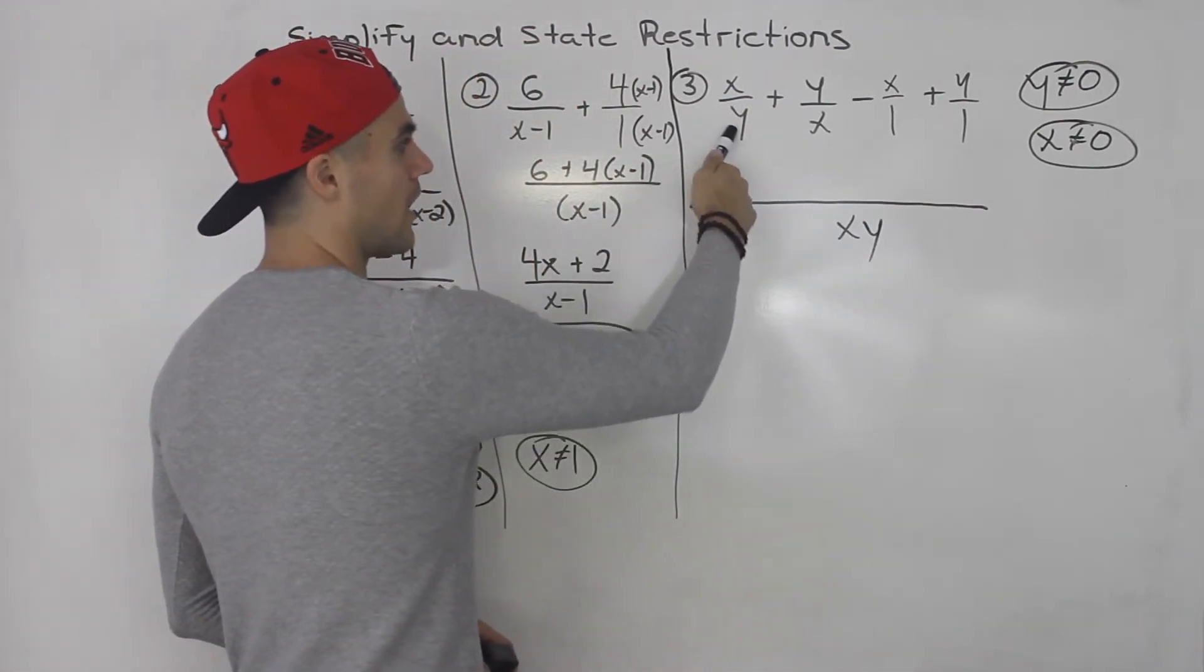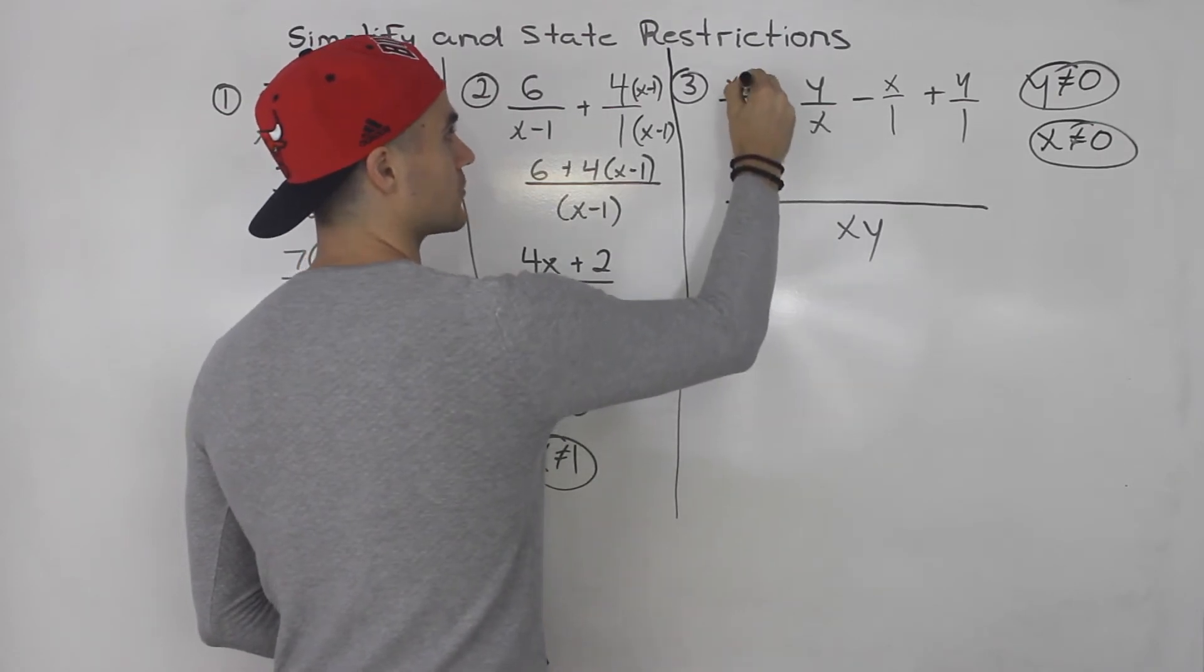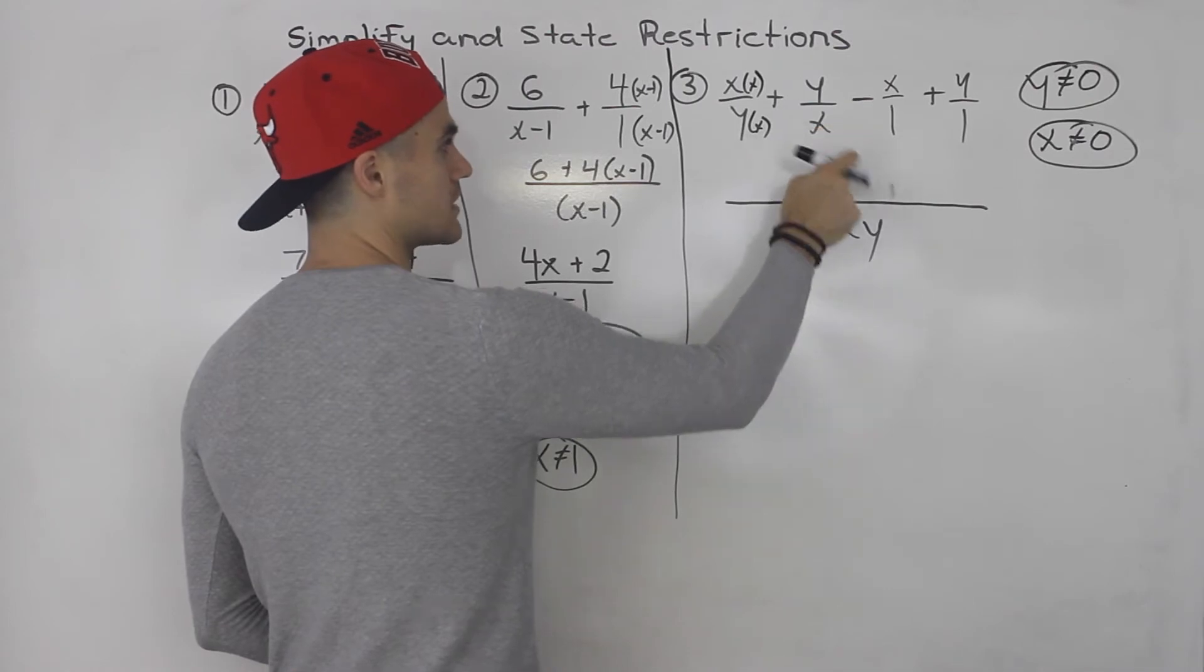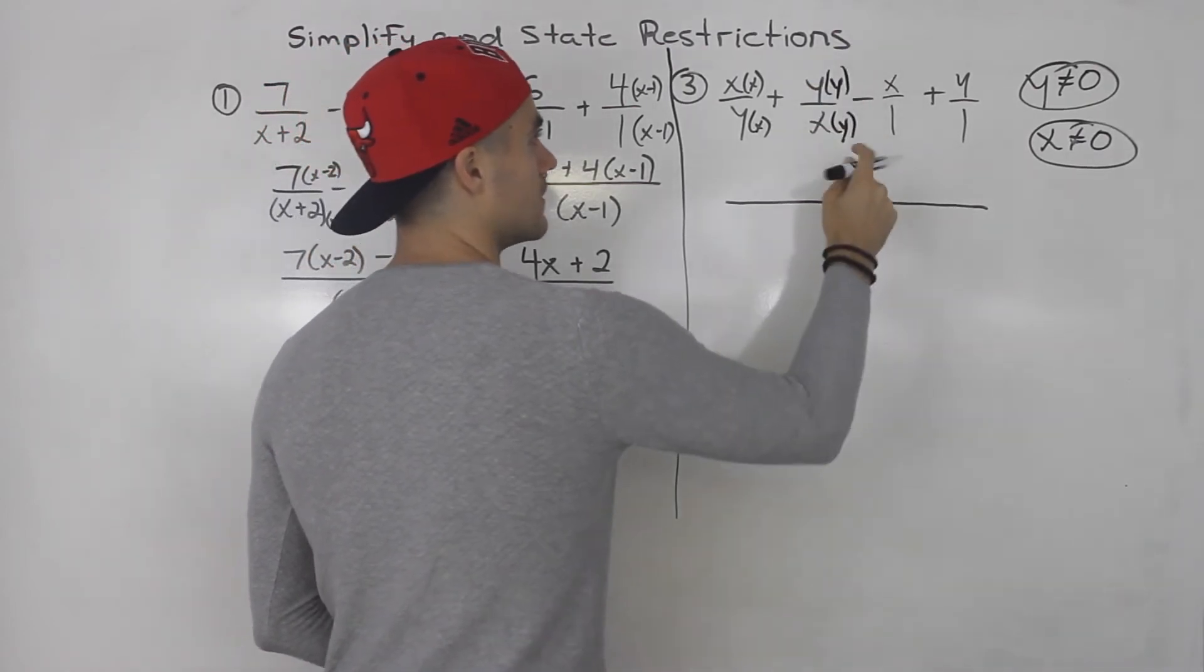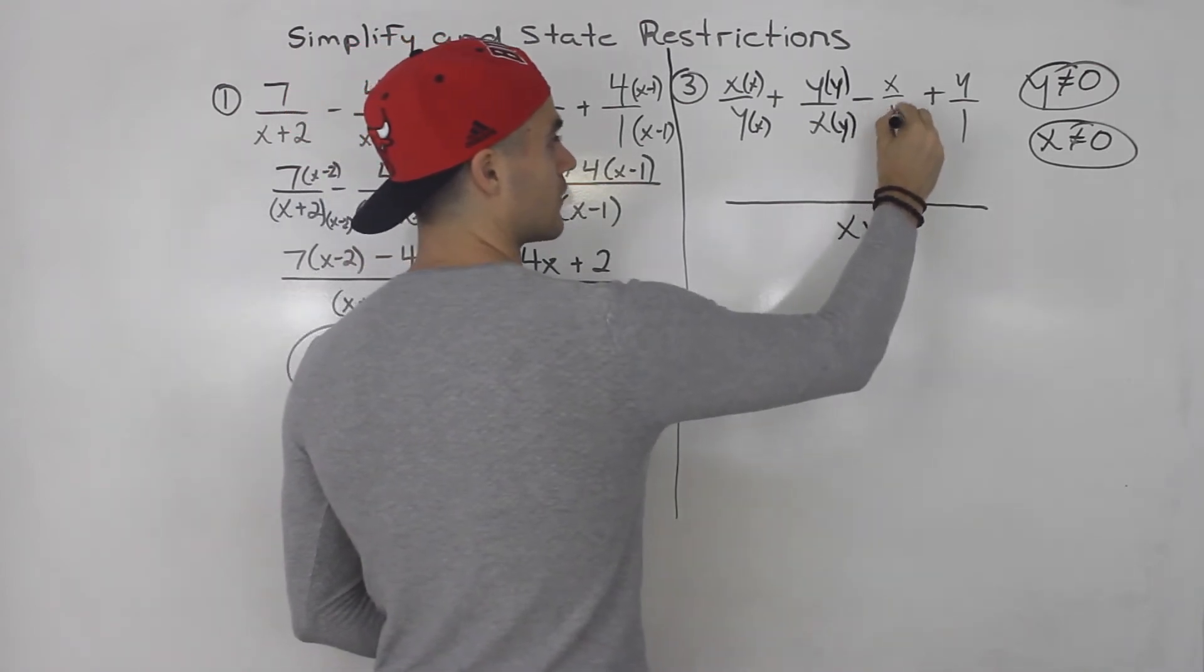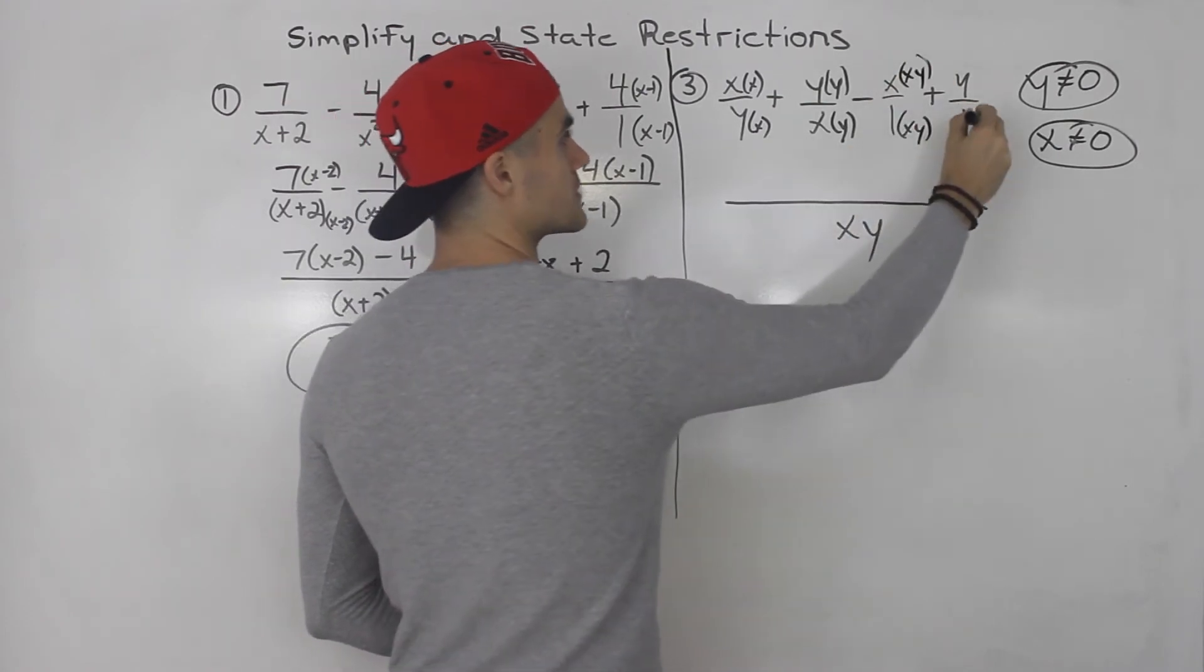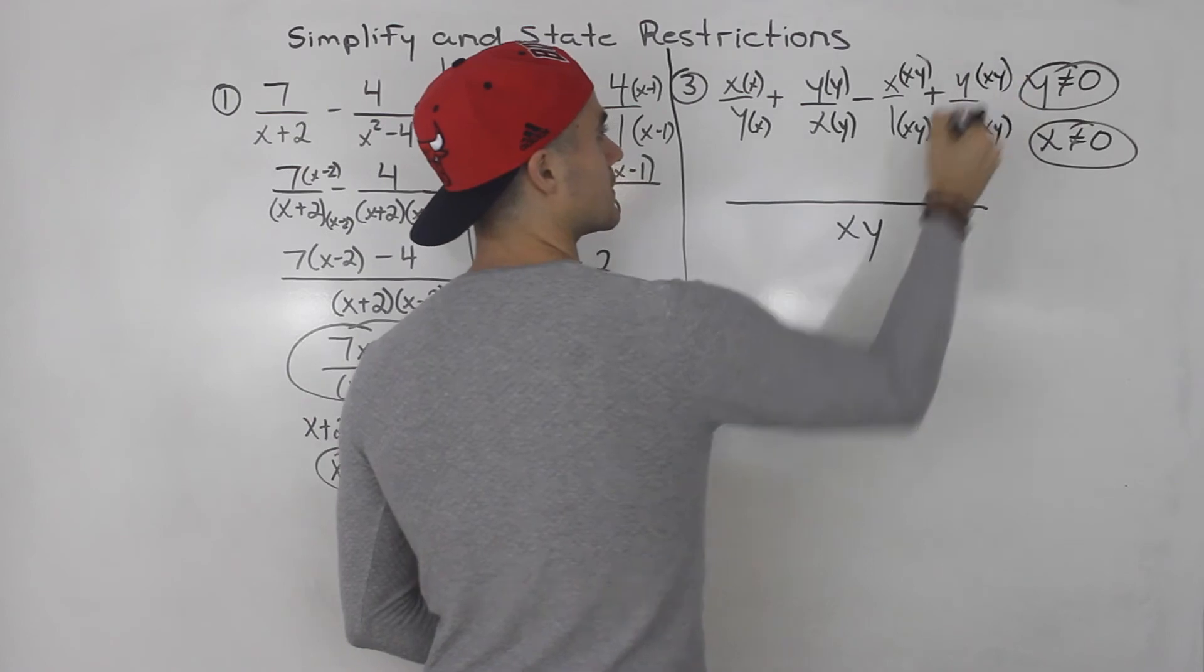So what do we multiply the y to get xy? We have to multiply it by x. We have to multiply the top by x. What do we multiply the x by to get xy? Multiply it by y. So we multiply the top by y. This one, we have to multiply by xy. So we multiply this by xy. And this one, multiply by xy, multiply the top by xy as well.